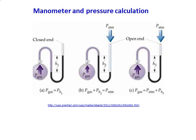In case C, the height of the open end is larger than the arm connected to the gas. In that case the calculation is: pressure of gas equals pressure of atmosphere plus height. The formulas are different for cases B and C, and we will apply these formulae to calculate the pressure of certain gases.